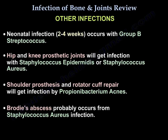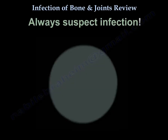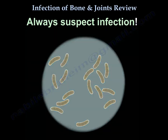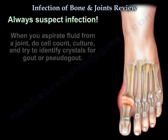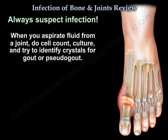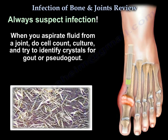Other infections: newborns get infection at 2 to 4 weeks with group B strep, typically in the hips and knees. Prosthetic joints get infection with Staph epidermidis or Staph aureus. Shoulder prostheses and rotator cuff repairs get infection by Propionibacterium acnes. Brodie's abscess is probably Staph aureus. Juvenile rheumatoid arthritis may look like an infection but is not. When aspirating fluid from a joint, do cell count, culture, and try to identify crystals for gout or pseudogout.